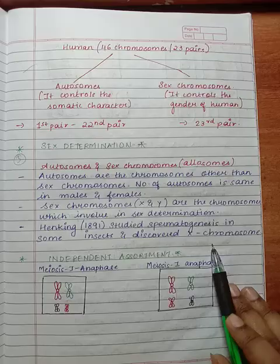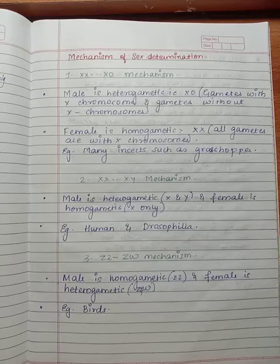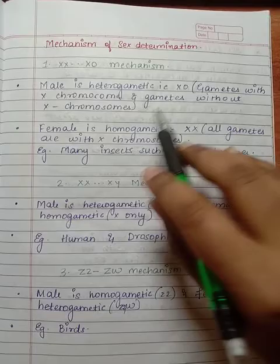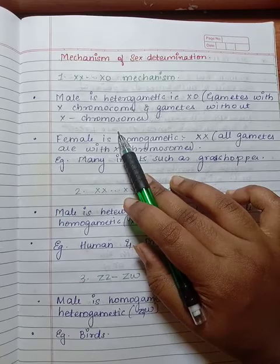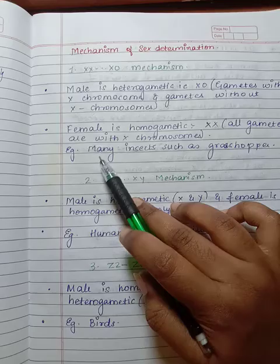Now let us look into the mechanism of sex determination. The first one is the XX and XO mechanism. Male is heterogametic, that is, produces gametes with X chromosome and gametes without the X chromosome. Female is homogametic, that is XX, all gametes are with X chromosome. For example, many insects such as grasshopper.